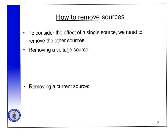If we want to consider the effect of a single source then we need to remove all the other sources. Before I apply superposition to an example I'm just going to show you quickly how we remove sources. Let's consider a simple circuit with a resistor which we'll call R, a voltage source which we'll call Vs, and a current source which we'll call Is.